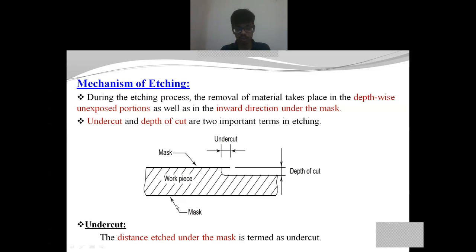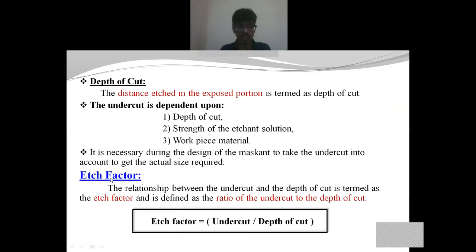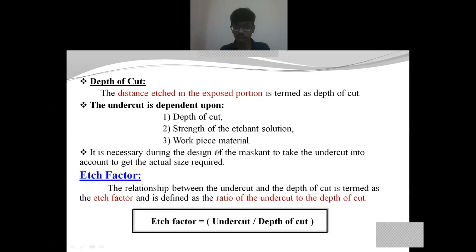These two are the important terms. The third important term is the H factor, or edge factor, which is a constant that relates undercut and depth of cut. It is simply the ratio of undercut to depth of cut. The undercut is a function of three variables: depth of cut, strength of the etchant solution, and workpiece material.